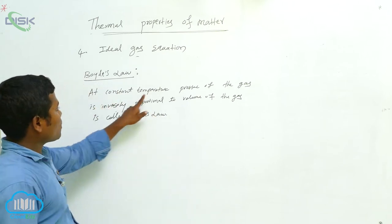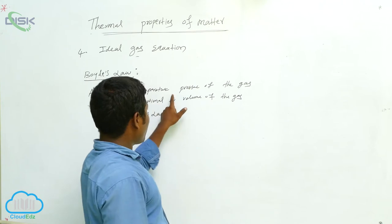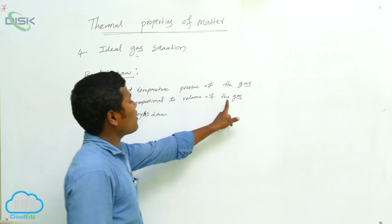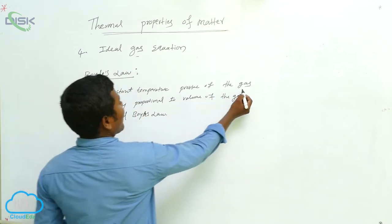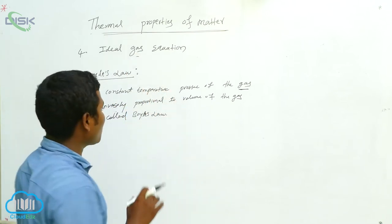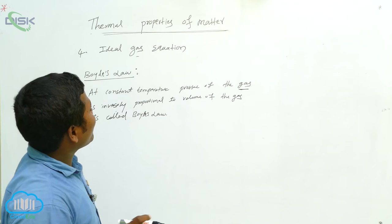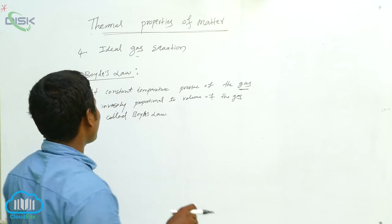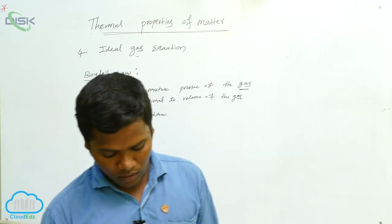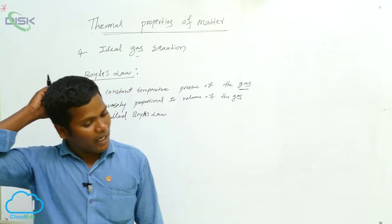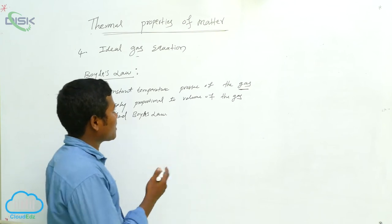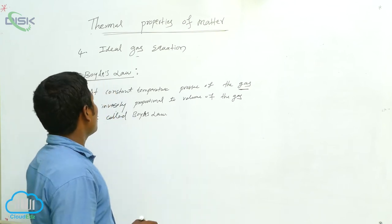Boyle's law states: at constant temperature, the pressure of the gas is inversely proportional to the volume of the gas. We are considering gas here — specifically an ideal gas. There is no ideal liquid equation. If you give more heat to a liquid, it boils and evaporates, which means it becomes a gas. That is why we derive the ideal gas equation.